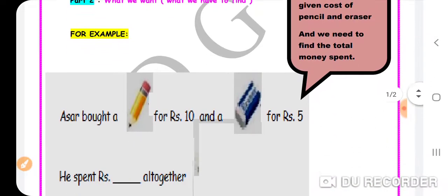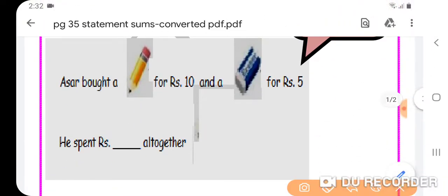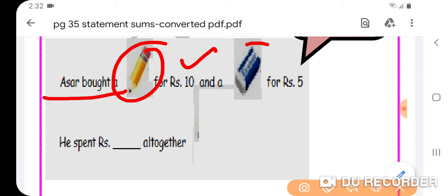Now look at the example here. Asar bought a pencil for rupees 10 and an eraser for rupees 5. Now he spent rupees dash all together.